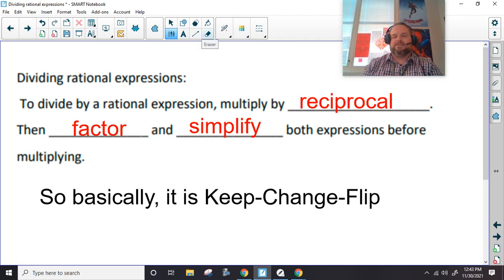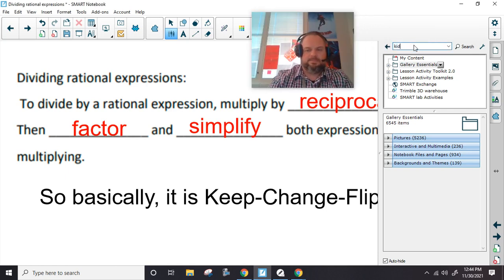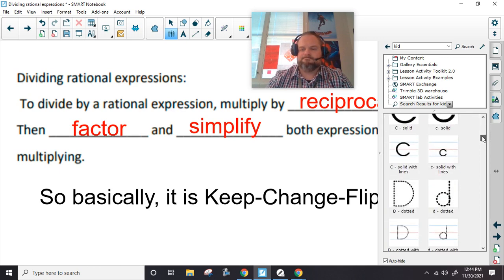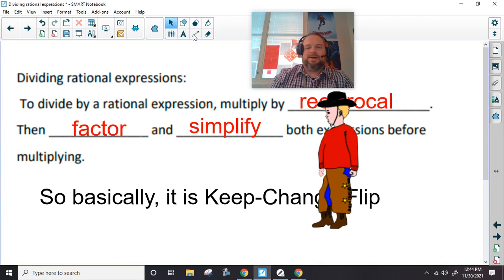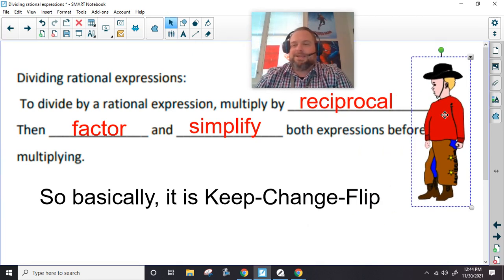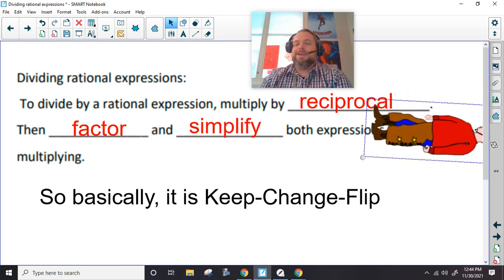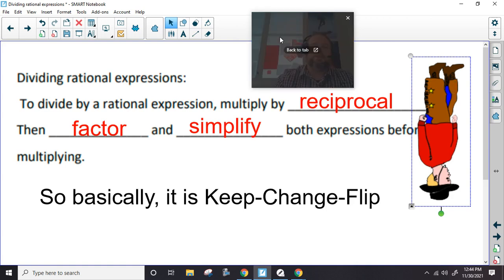When we divide, we multiply by the reciprocal. Remember the reciprocal? Let's see if we can find a person. So if this person found a snake in their boot, to find the reciprocal we would actually flip him upside down. That's what we're going to do, and in old school things it's the old keep, change, flip.